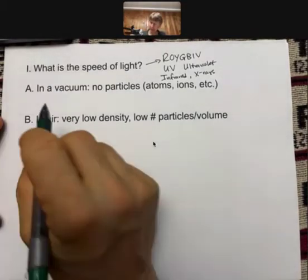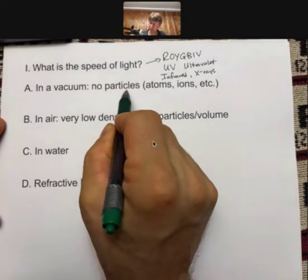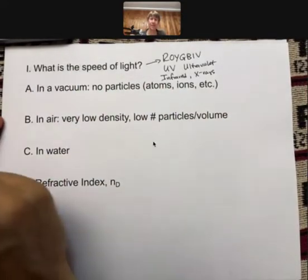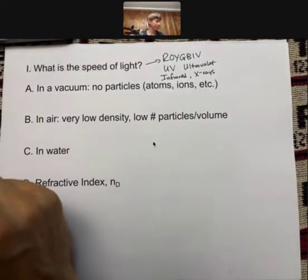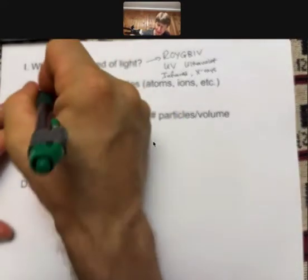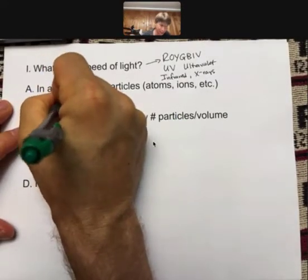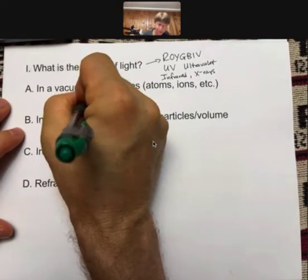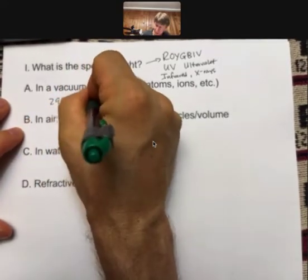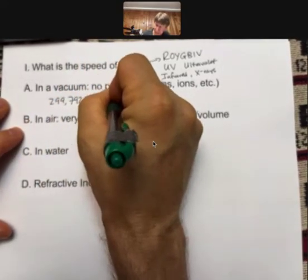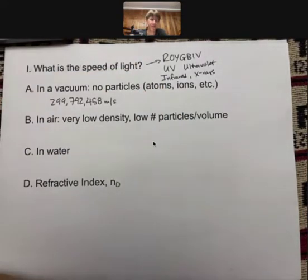And in a vacuum—no particles, no atoms, no ions, nothing—the speed of light is 299,792,458 meters per second. Wow, that's fast. And that's a lot of significant figures. We have figured this number out very well, we in the science sense, not me.